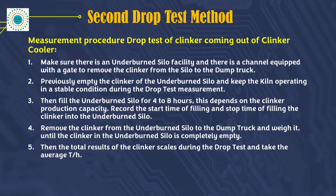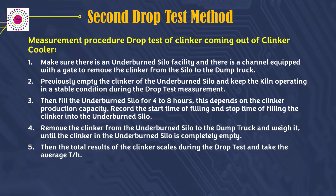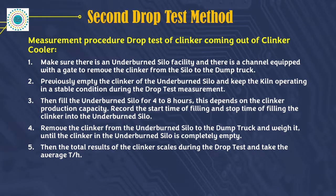Second drop test method. Measurement procedure: drop test of clinker coming out of the clinker cooler. Make sure there is an underburn silo facility with a channel equipped with a gate to remove the clinker from the silo to the dump truck. Previously empty the clinker from the underburn silo, and keep the kiln operating in a stable condition. Then fill the underburn silo for 4 to 8 hours depending on clinker production capacity, and record the start and stop times of filling.